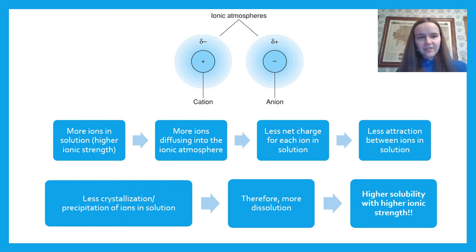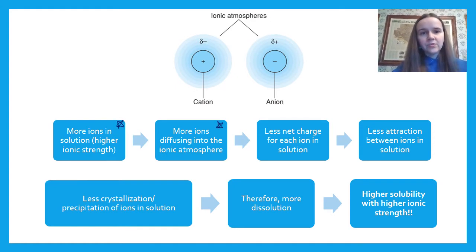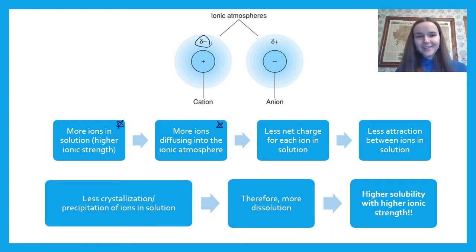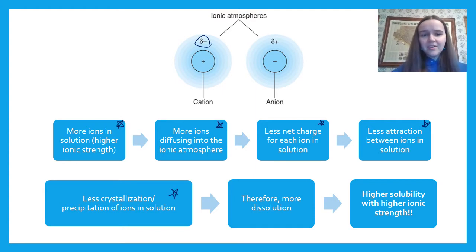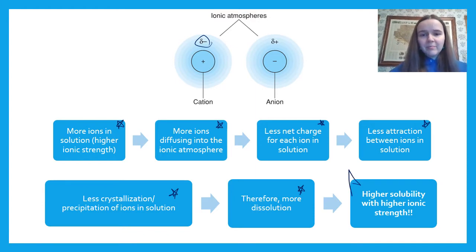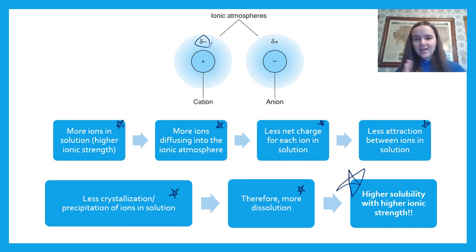Following this flowchart: if you have more ions in solution — higher ionic strength — then you have more ions in that ionic atmosphere, and you get a more significant partial negative charge around a cation. That cation has less net charge, which means less attraction between ions in solution. If they aren't attracted to each other, they don't crystallize or precipitate, so you end up with more in solution — higher solubility with higher ionic strength.